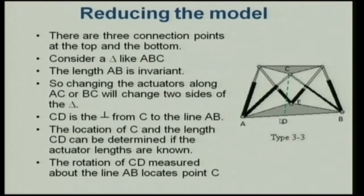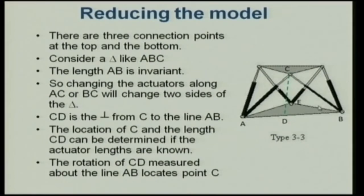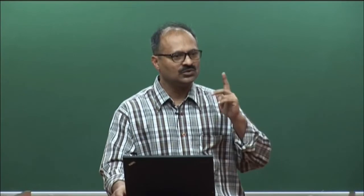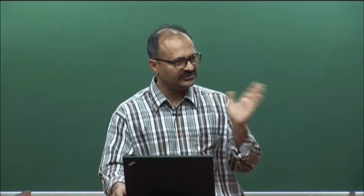My only variable is the angle made by line CD about the axis through AB. Three base points define a plane, giving me a reference to measure from. This is the essential reduction: using the triangle reduces a path that was a sphere in space to a circle in space, whose radius is CD. Simpler problem.